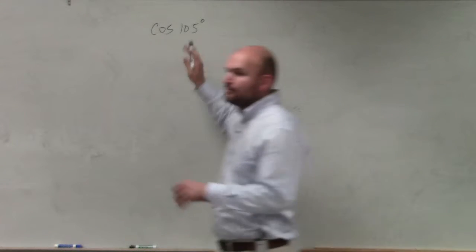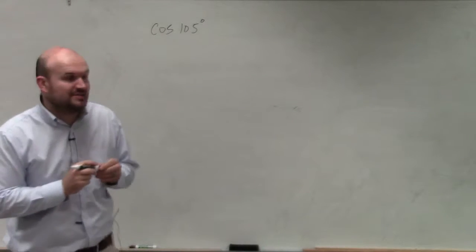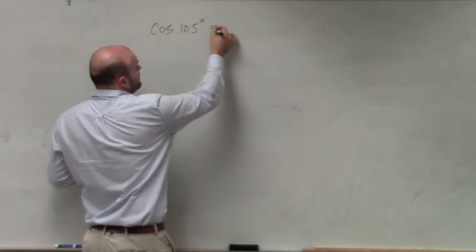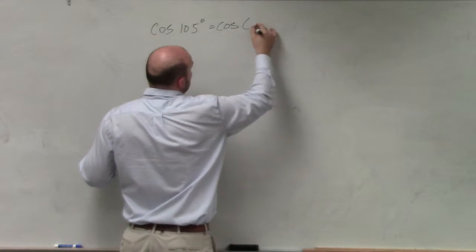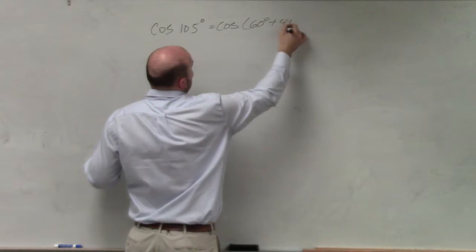OK. So let's take a look at this one. Guys, again, I want to let you know that I will provide you with the addition or subtraction. So in this one, we have cosine of 60 degrees plus 45 degrees.